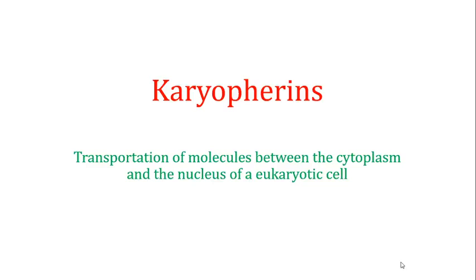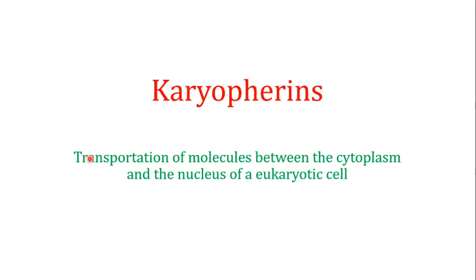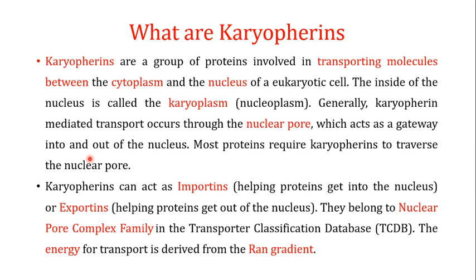Welcome back to this next video. In this video we are going to talk about the karyopherins, specifically the second important class. In the last video I told you that karyopherins are a group of proteins involved in transporting molecules between the cytoplasm and the nucleus of eukaryotic cells. They are broadly divided into two classes: the importin proteins, which transfer proteins from the cytoplasm into the nucleus, and the exportin proteins, which help move proteins from the nucleus into the cytoplasm of the cell.